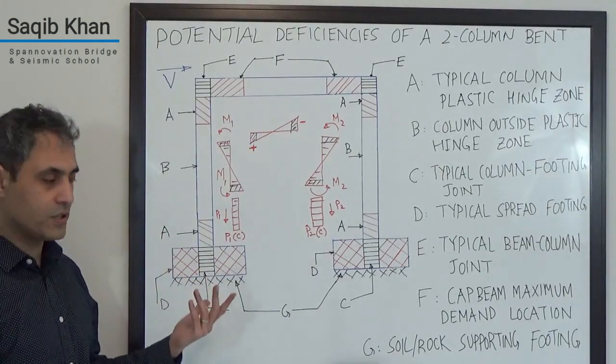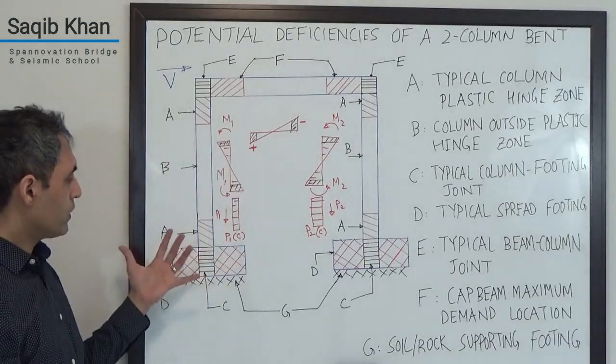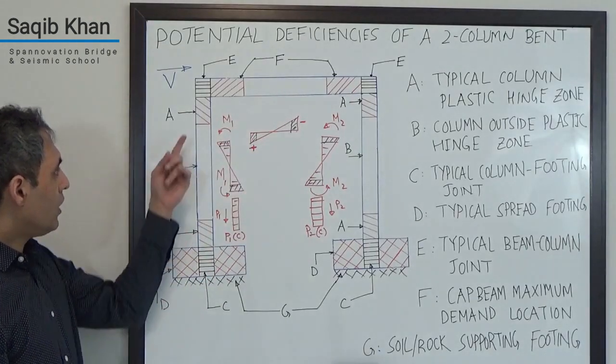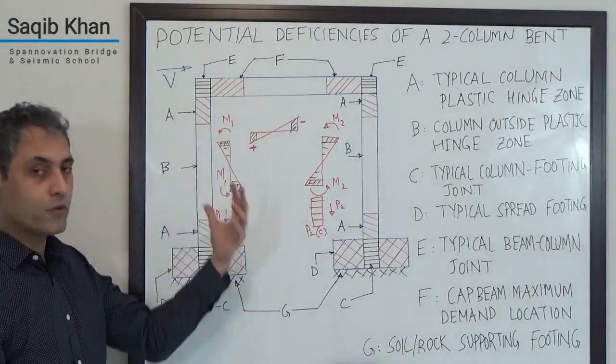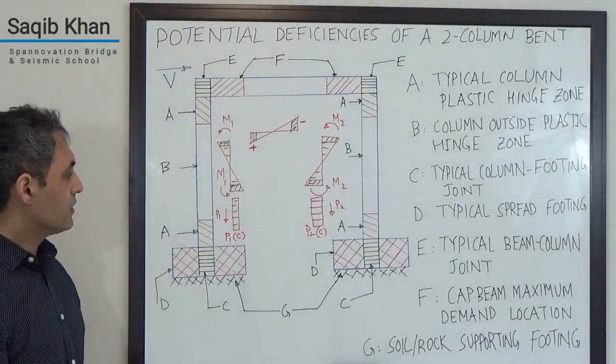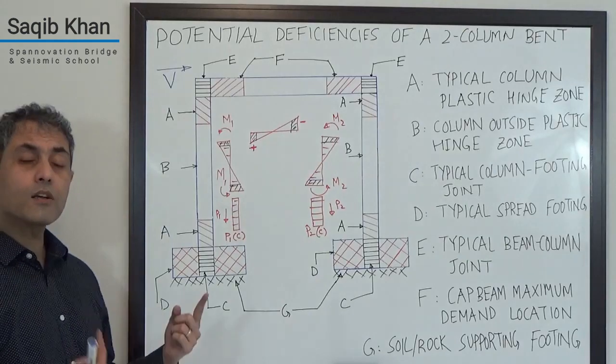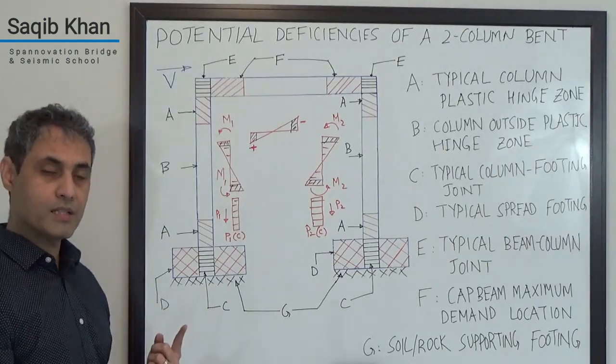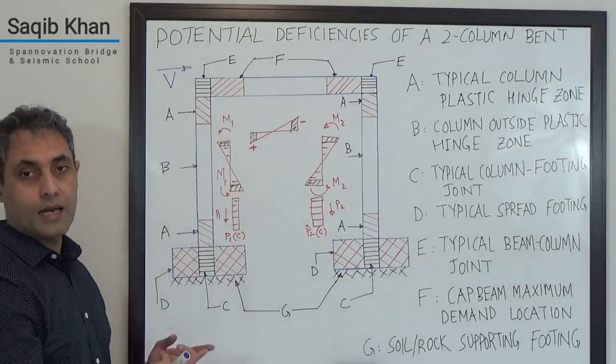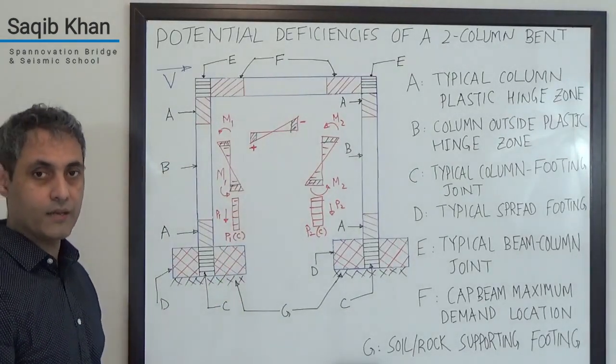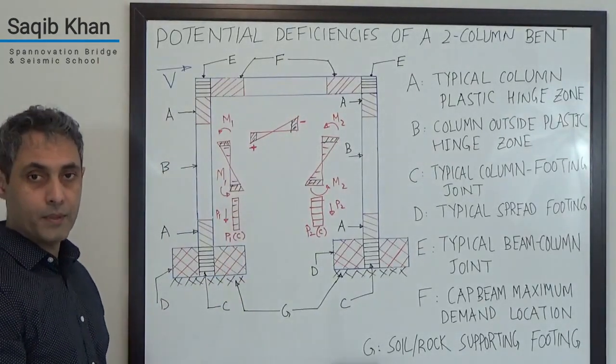These are the structural fuses. In a bridge bent, what we do is we make the columns weaker than everything else, so they cap the overall demand that can get into the system. This is in contrast to what we have in buildings. In bridges, we have weak column, strong beam analogy, whereas in buildings, we have strong column, weak beam analogy.